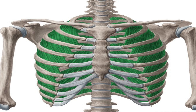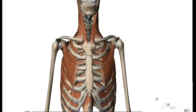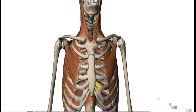The action of the external intercostal muscle is to elevate the rib during forced inspiration. The action of normal respiration is done by the diaphragm, but when we inspire by force, these external intercostal muscles assist the forced inspiration by elevating the ribs.